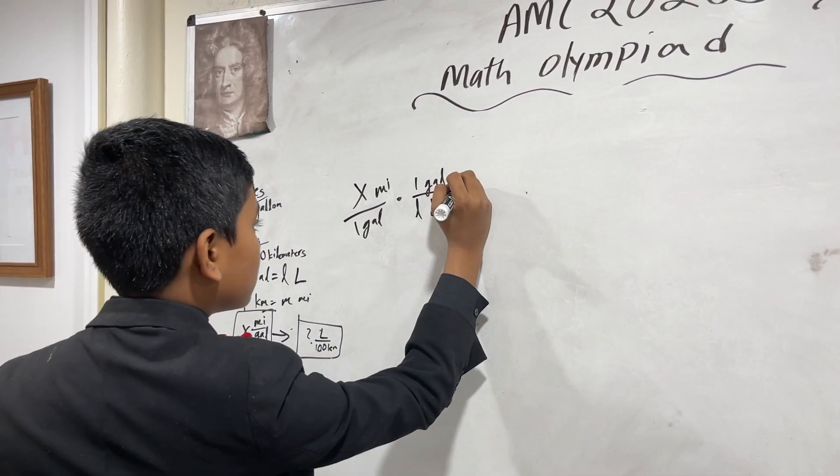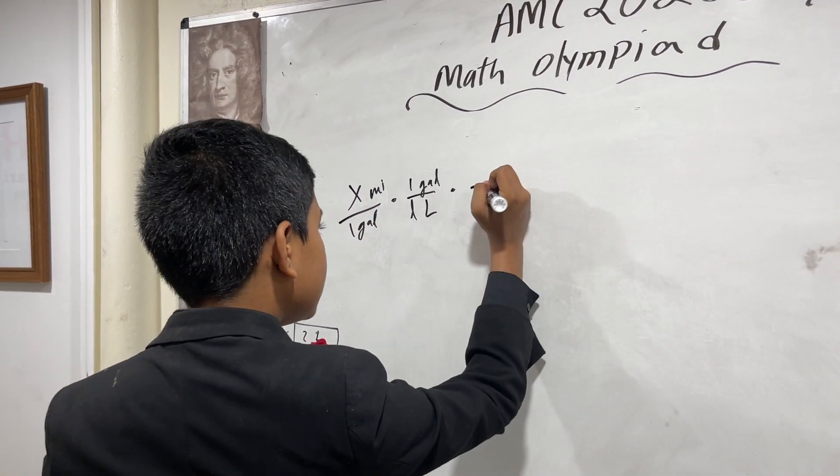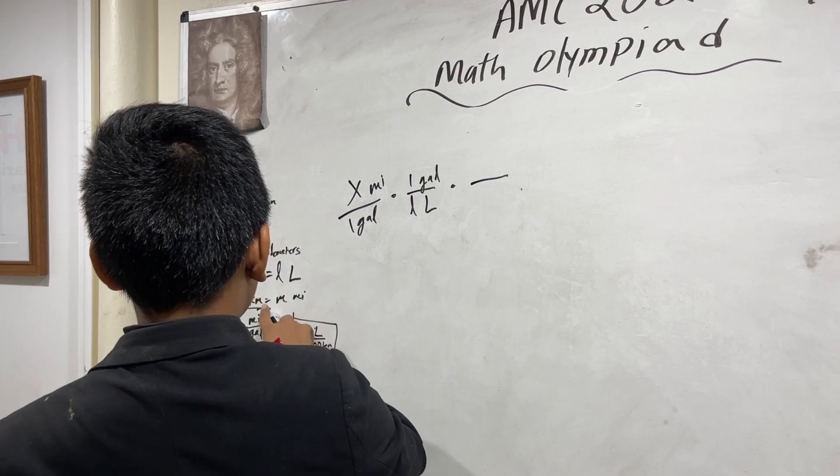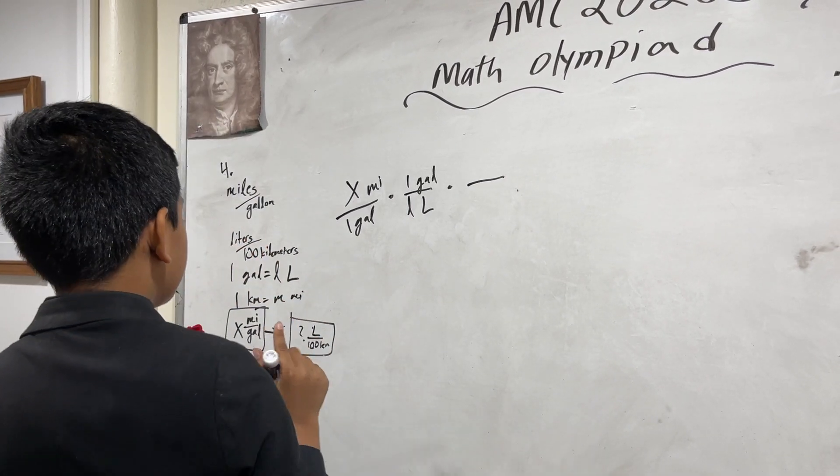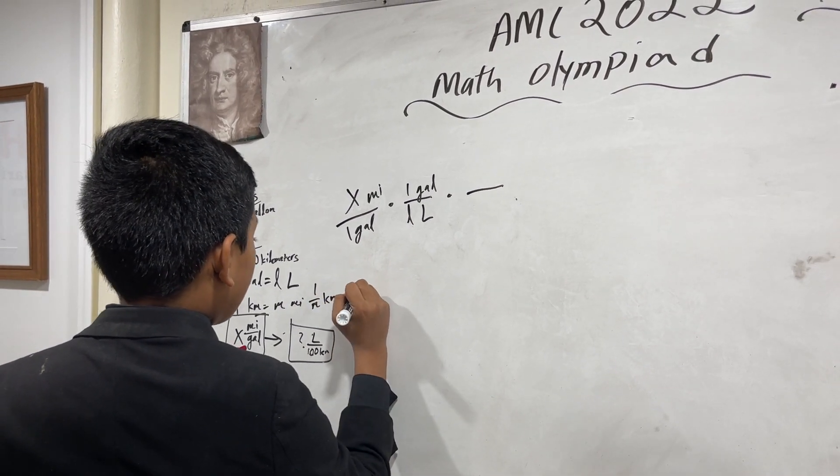So, one gallon is L liters, as shown. Now, we have the miles. The thing is, one kilometer is M miles. But look at this. That means one over M kilometers equals one mile.